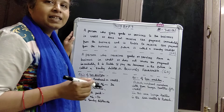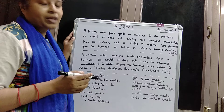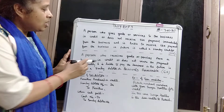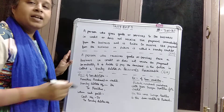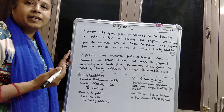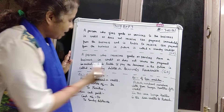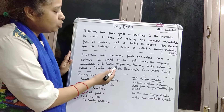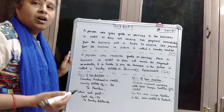Sundry creditors are written under current liabilities on the balance sheet. Now, what are sundry debtors? Sundry debtors are those who receive goods or services from a business on credit — not for cash — and do not make the payment immediately, but are able to pay the business in the future.